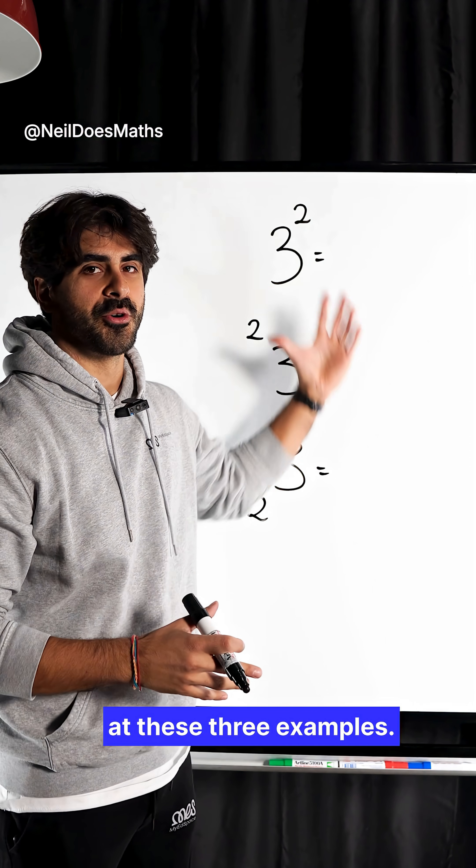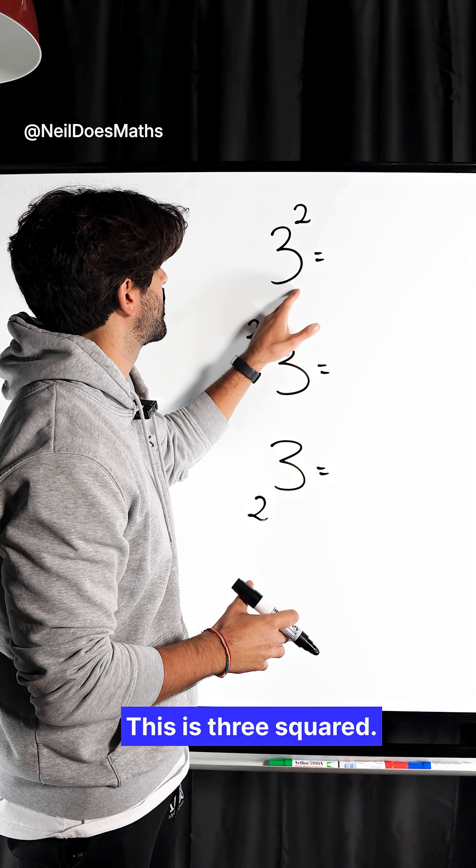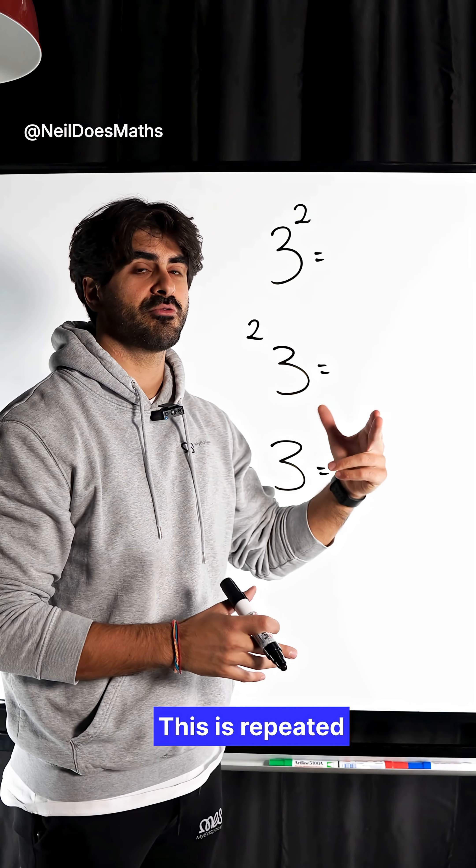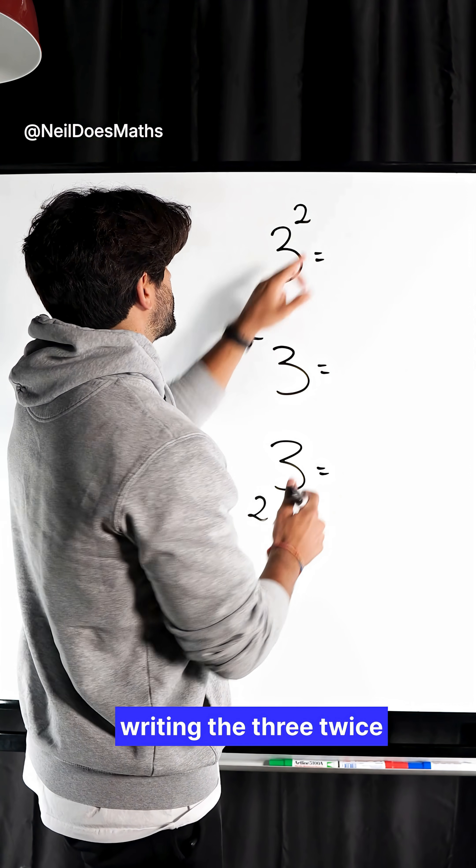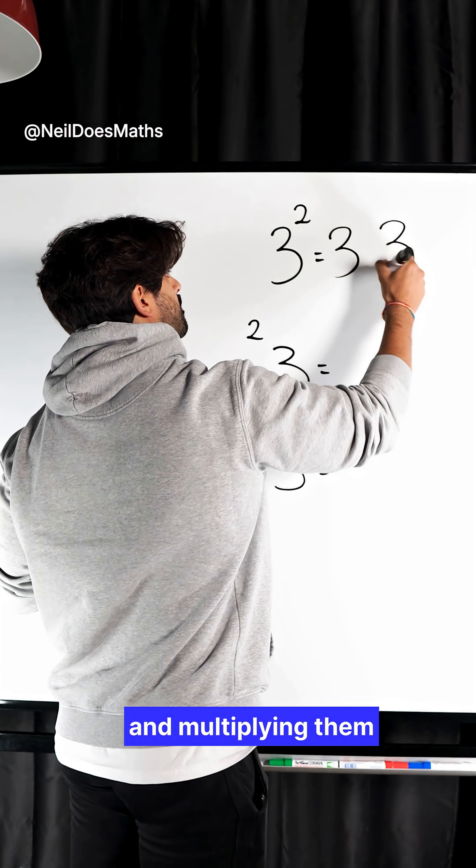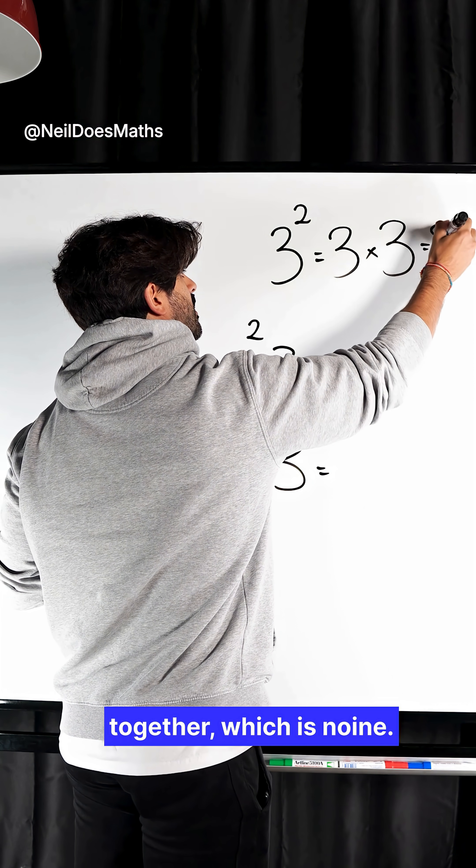Let's take a look at these three examples. This is three squared. This is repeated multiplication. What we're doing is we're writing the three twice and multiplying them together, which is nine.